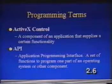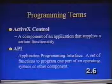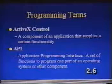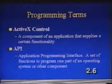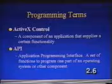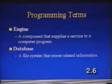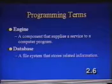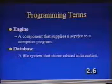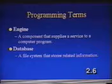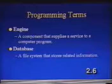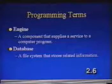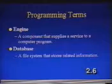API, or Application Programming Interface, basically means that somebody has written a set of functions to program one part of an operating system, or maybe even a part of an application or a component. Engine is another programming term — it's a component that supplies a service to the rest of the computer program itself. Database is a file system that stores related information together, and we will use databases typically in most programming that most of you will probably end up doing.